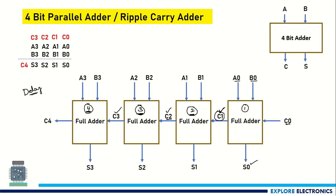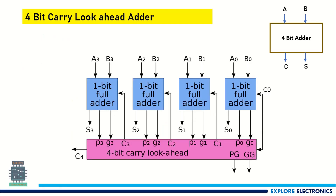To avoid this delay in generating the final carry, we need to go for a new approach — the carry look ahead adder. As the name itself says, the carry will be looking ahead of the single bit full adder. In the ripple carry adder approach, the full adder is responsible for generating the carry. That functionality is avoided here — there will be a separate carry look ahead block to generate the carries C1, C2, C3 and finally C4, avoiding the delay at each and every full adder level.